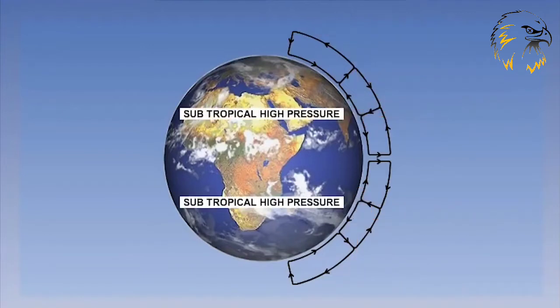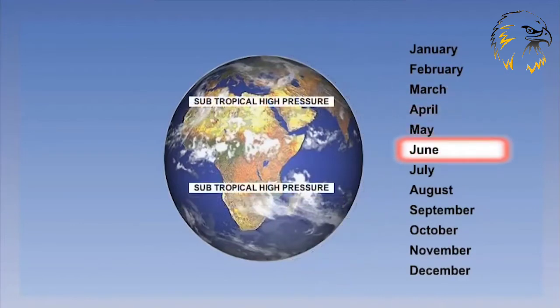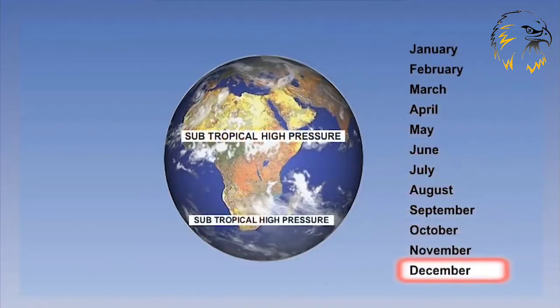These high pressures form two bands around the Earth, from about 20 degrees latitude to about 45 degrees latitude. They form what is known as the Subtropical Oceanic High Pressure Belt. This belt will move north and south with movement of the Sun, moving to higher latitudes in summer and lower latitudes in winter.